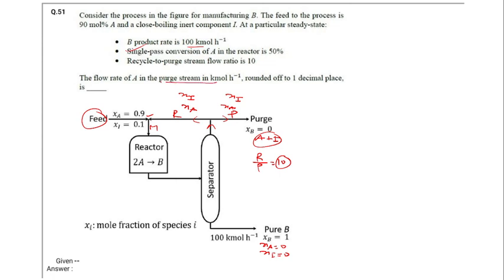They are asking what is the flow rate of A in the purge stream? It means they are asking P into XA. If P is the flow of purge and XA is the mole fraction of A in the purge, then P times XA they are asking.